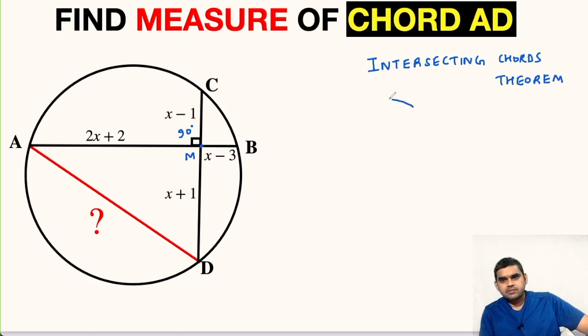According to this theorem, if we have a circle and if we draw two chords like this intersecting each other at any angle, if this length is A, this is B, this is C and this is D, then A times B is equal to C times D.